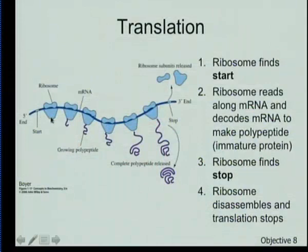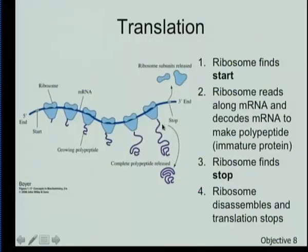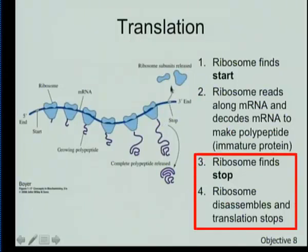The ribosome finds the start codon and reads three bases at a time as it moves down the messenger RNA strand. The polypeptide chain gets longer and longer, because every time it reads three bases, it adds an amino acid and moves down. When it gets to the stop codon, the ribosome gets disassembled and released, and those units can be reused.